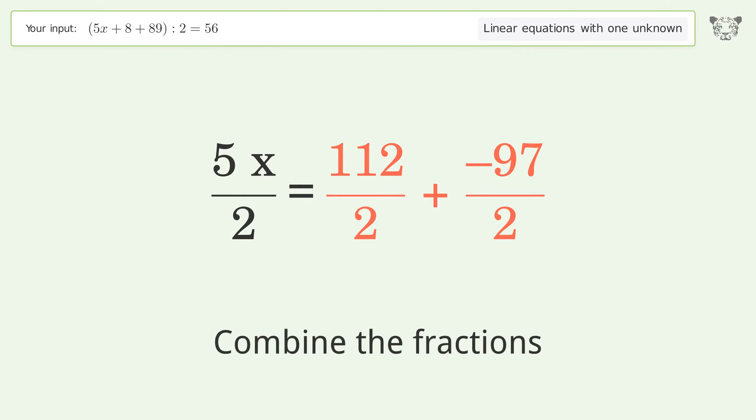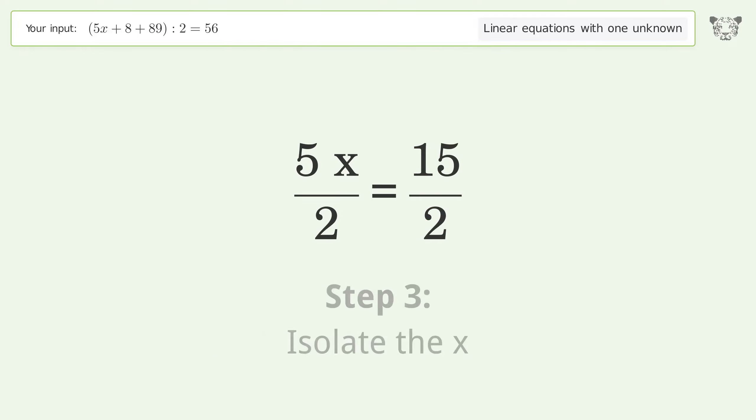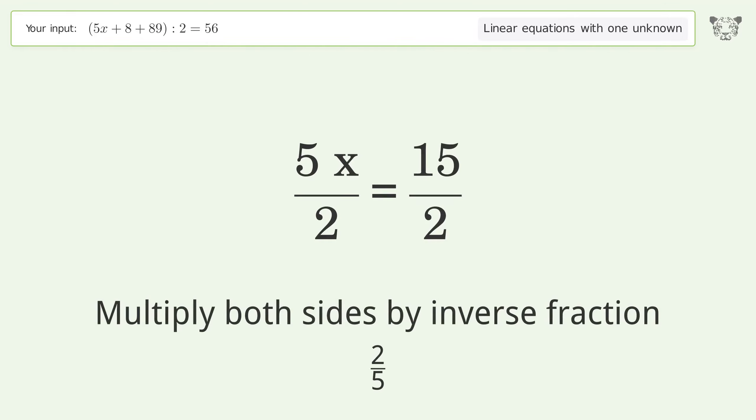Combine the fractions. Combine the numerators. Isolate the x. Multiply both sides by inverse fraction 2 over 5.